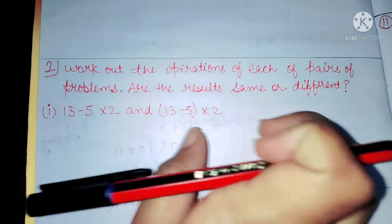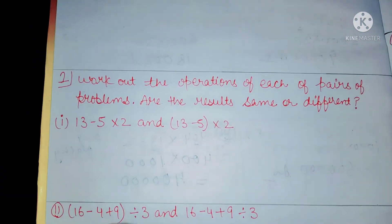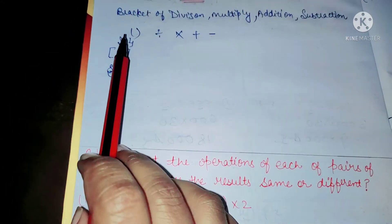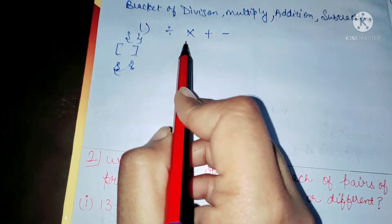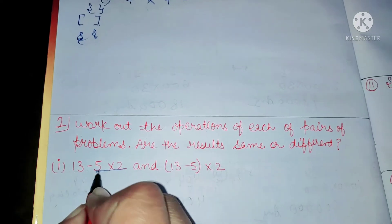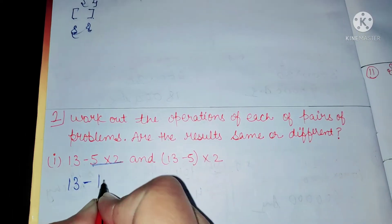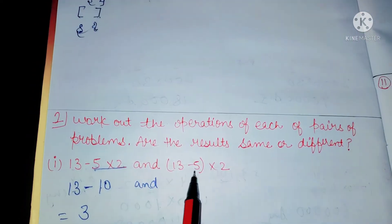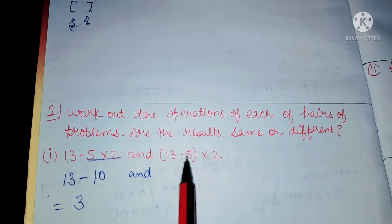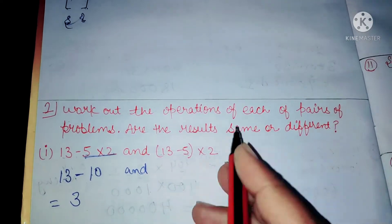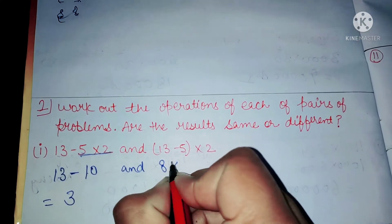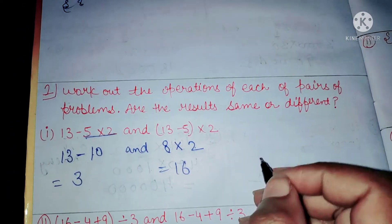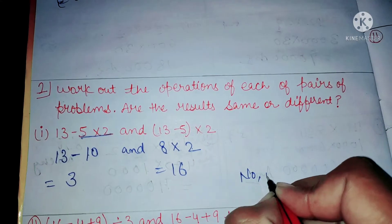Now according to BODMAS rule, we have first bracket. Does this equation contain bracket? No. Division? No. Multiply? Yes. First we have to multiply these two digits: 13 minus 5 times 10. Now 13 minus 10 equals 3. And now here contains bracket? Yes. First we have to solve the bracket: 13 minus 5 equals 8, multiplied by 2. Now 8 times 2 equals 16 is the answer.